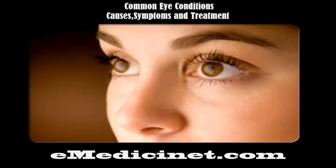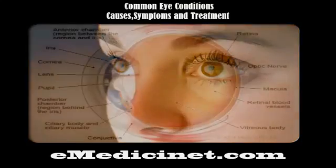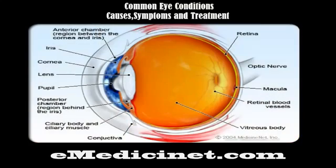Let's take a look at some of the most common eye diseases and conditions. The eye is made up of numerous components. As you proceed through the slideshow, you may use this illustration to reference the main structure and anatomy of the eye.